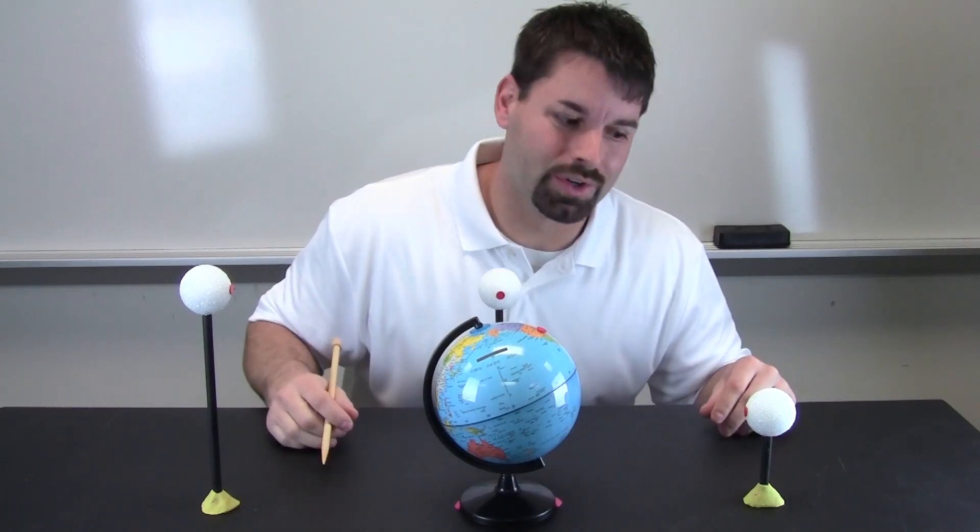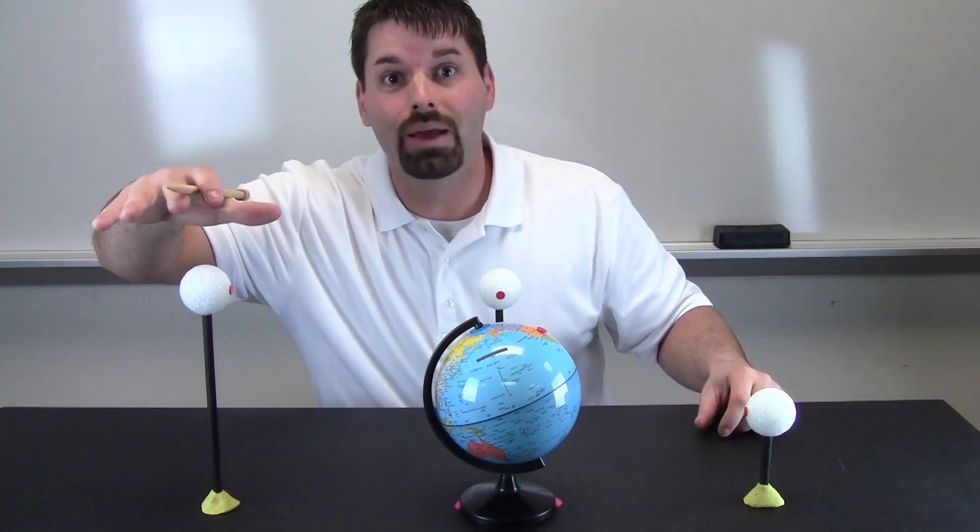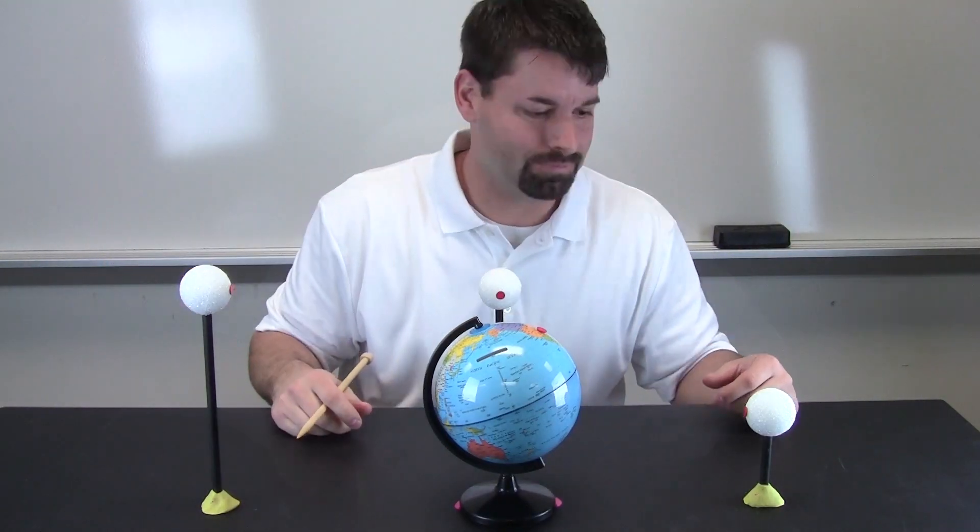We also want you to notice that the moon is not always in line with the earth. Sometimes it is below it, sometimes it is above it. It is pretty neat. So now we are going to shut off the lights and explain why we can see the moon.